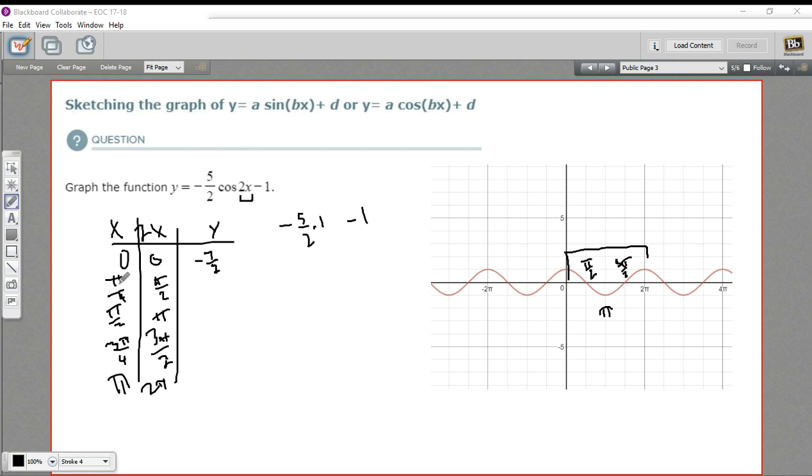Let's try putting in π over 4. We multiply it by 2. We get π over 2. The cosine of π over 2 is 0. So negative 5 halves times 0 is just 0. So this is negative 1.